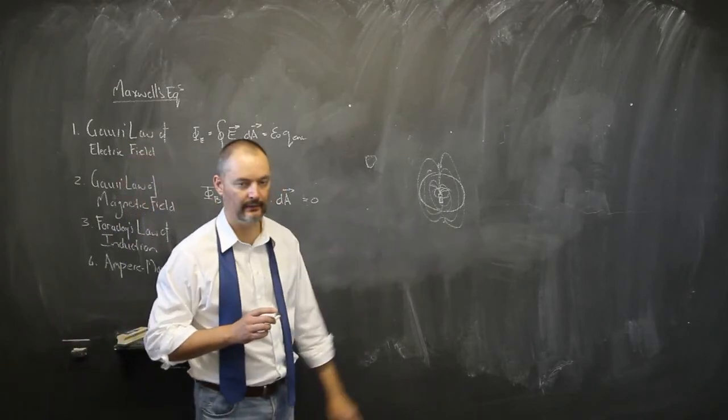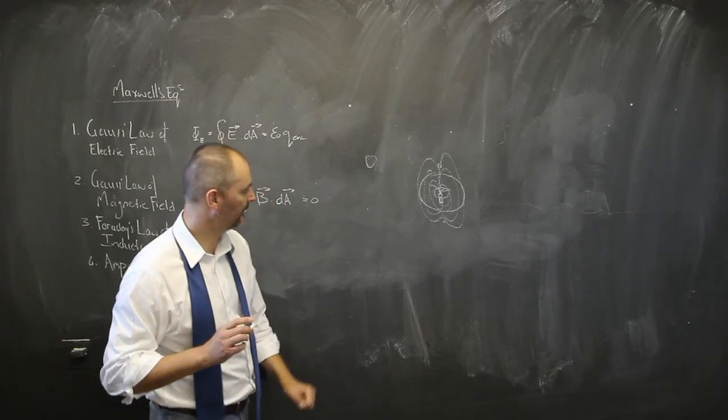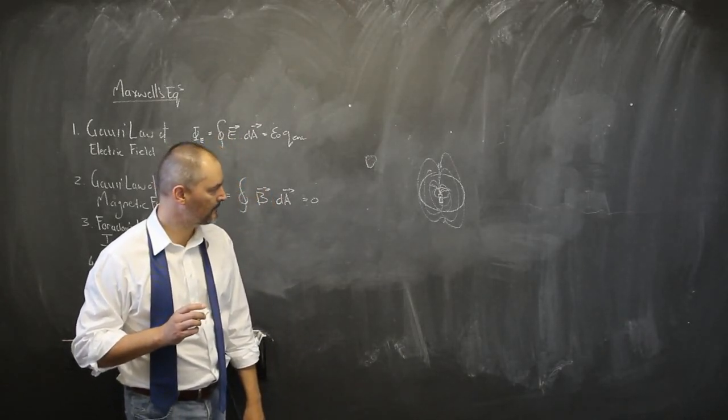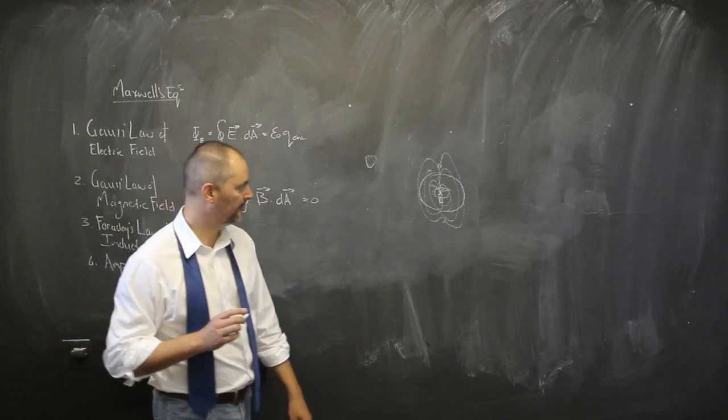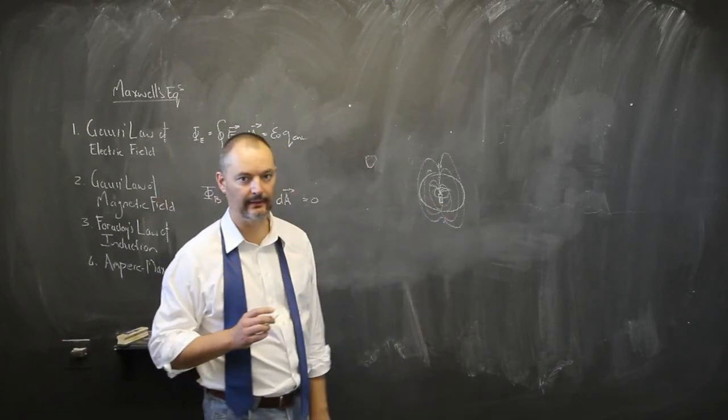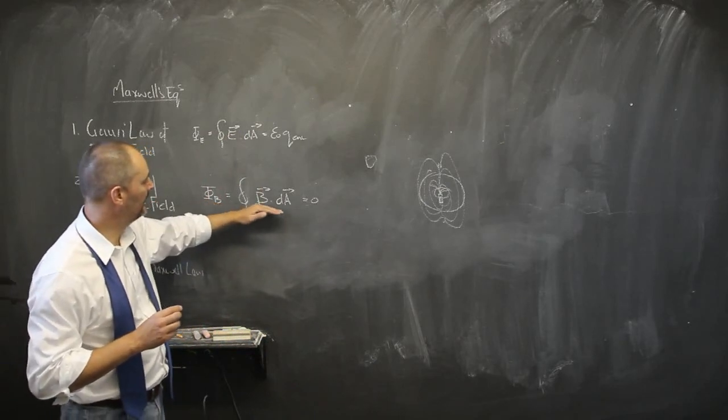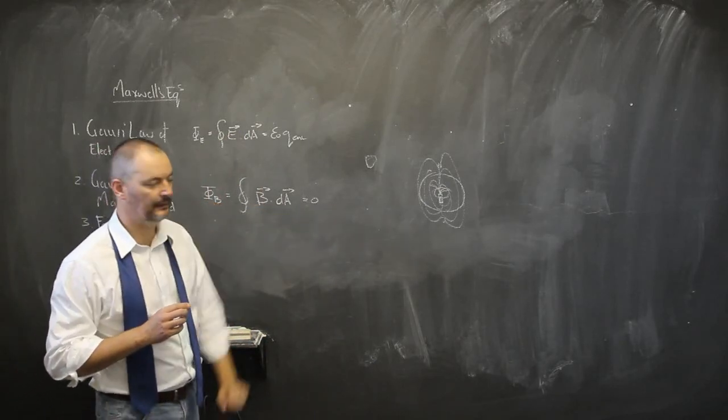So the net flux through any surface is zero. Purely because I cannot isolate a pole. There's always a magnetic dipole in any imaginary Gaussian surface that I draw around a magnet. Whether that's a bar magnet or electrical current carrying coil, or whatever the arrangement might be. Electromagnet or bar magnet. The flux has got to be zero.